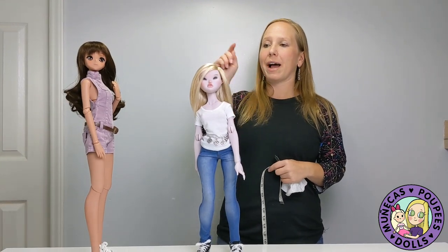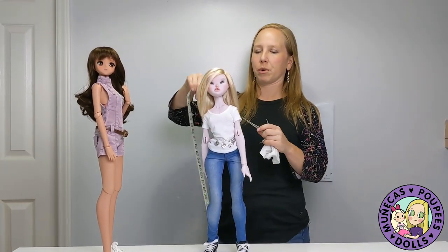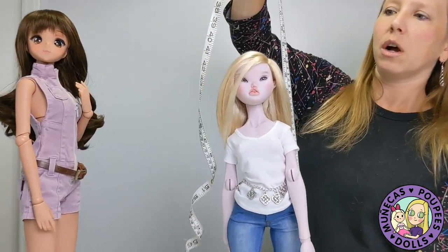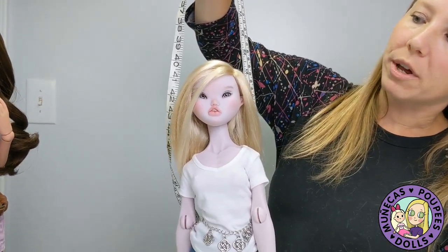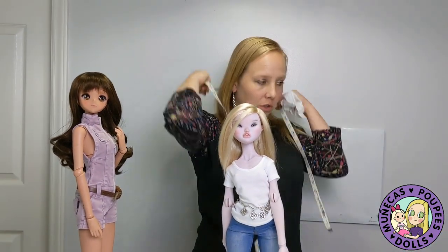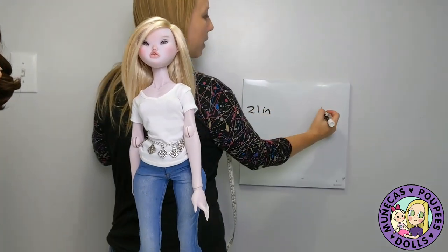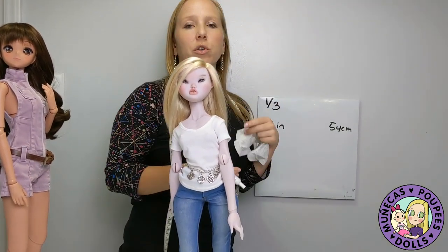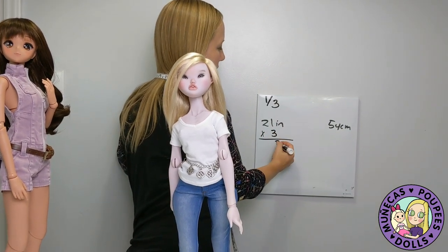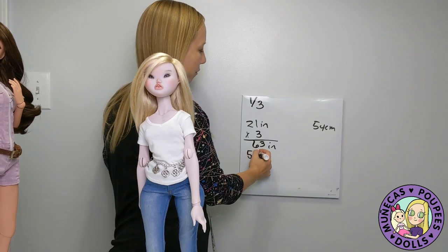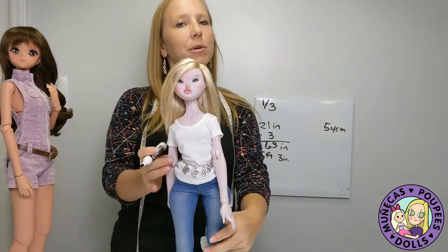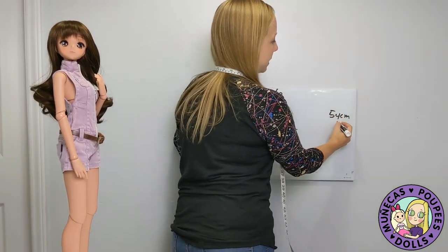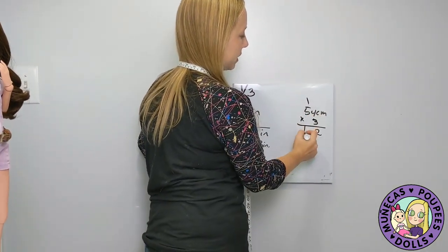For 1/3 scale I have Ondine from La Belle du Jour. She's right at 21 inches tall or about 54 centimeters. At 1/3 scale — one over three — we multiply by three: 21 times 3 is 63 inches, which is five feet three inches tall. She's almost my size with just three inches on me!